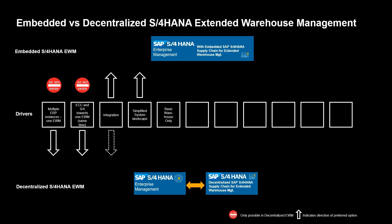Number five. In EWM, we distinguish between basic and advanced functionality. If your functional requirements are modest — on par with what is currently available in ERP WM — basic EWM would suffice, and you would probably conclude on the embedded deployment option.